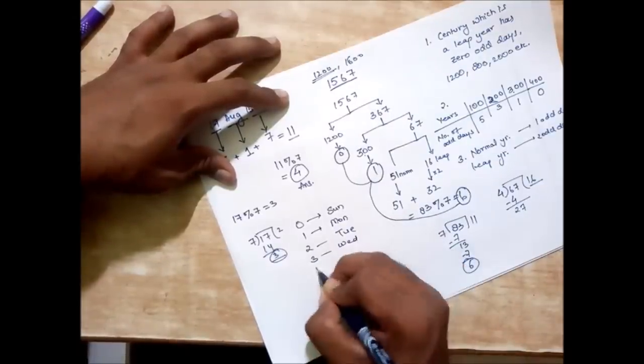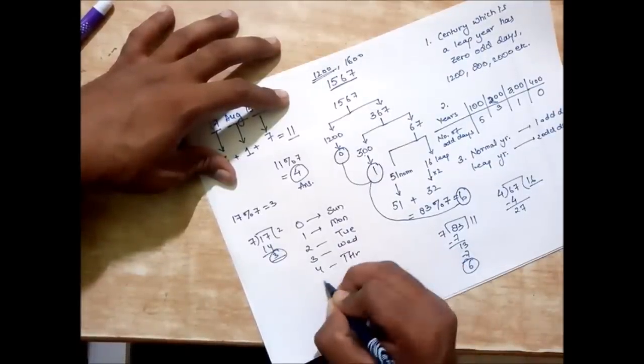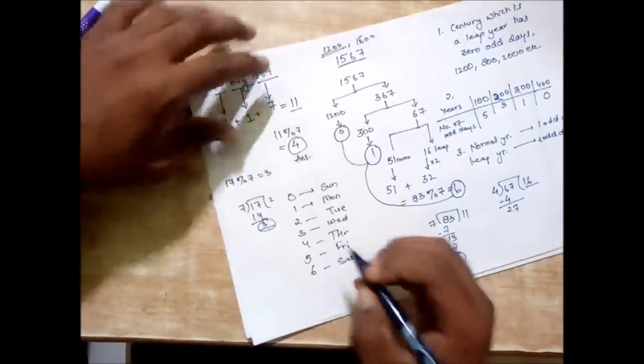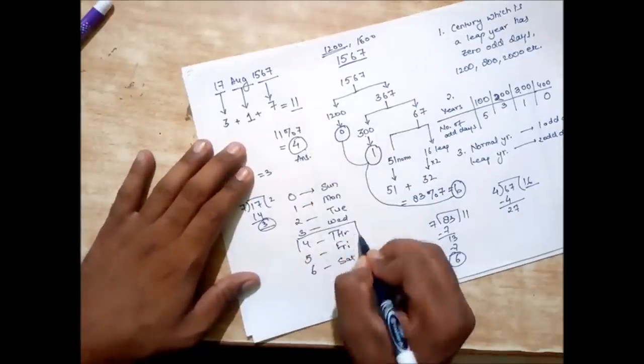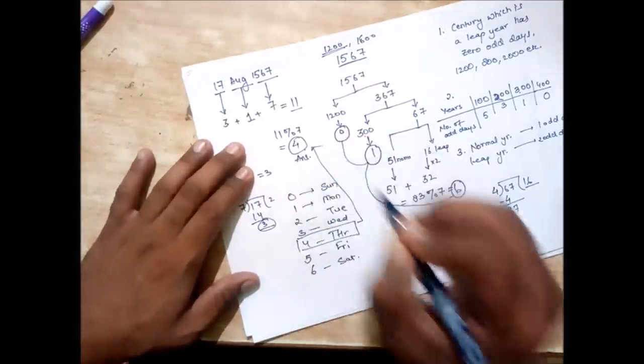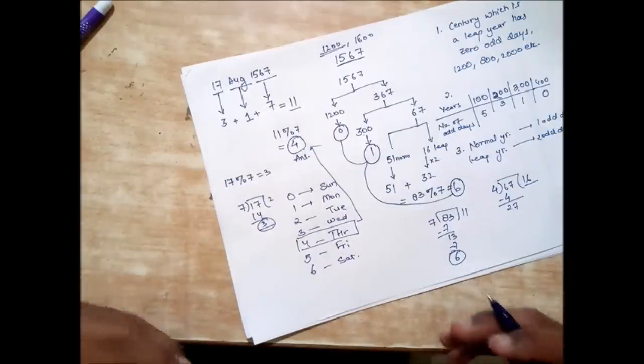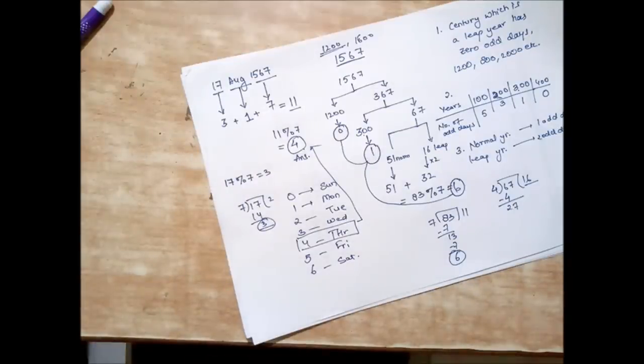Because 0 stands for Sunday, 1 for Monday, 2 for Tuesday, 3 for Wednesday, 4 for Thursday, 5 for Friday, 6 for Saturday. So according to our answer we have got 4 which is a Thursday. So that's how we can find out how to calculate it within a minute. With practice you will get quicker. If you have any doubt you can post down in the comments below.